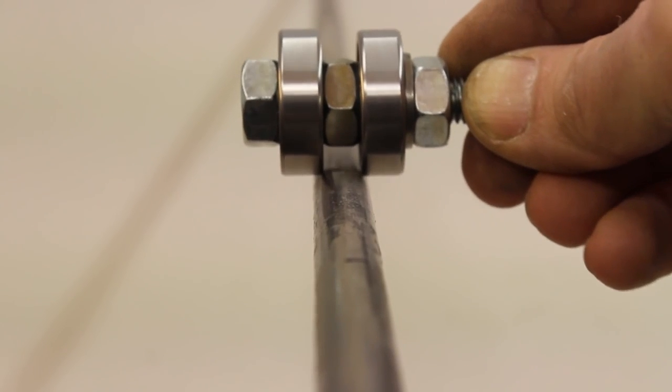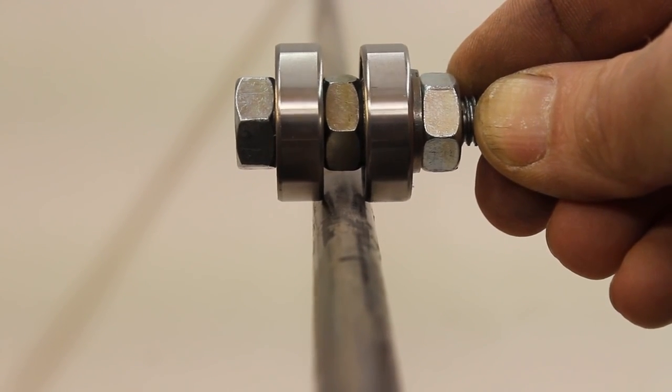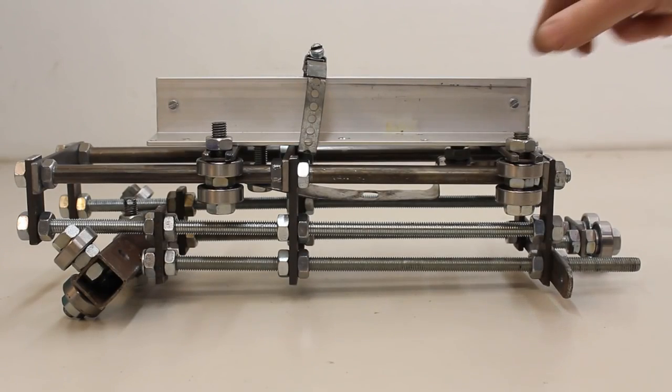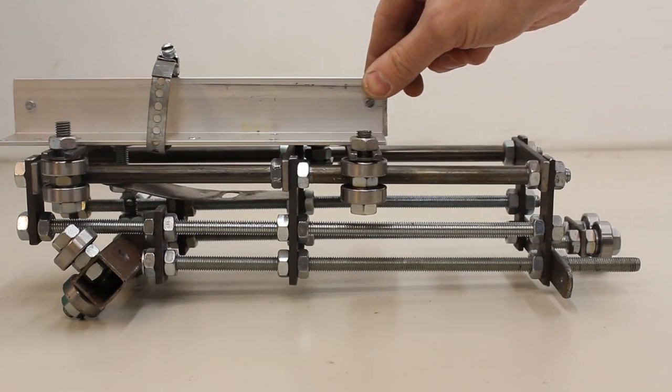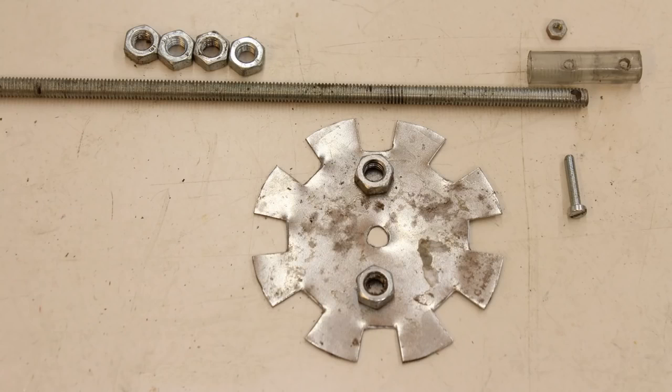The Z axis is guided by ball bearings running on round tubes. The carriage for the Z axis is based on two aluminum angle profiles. The 6mm threaded bars for the drive are mounted next.